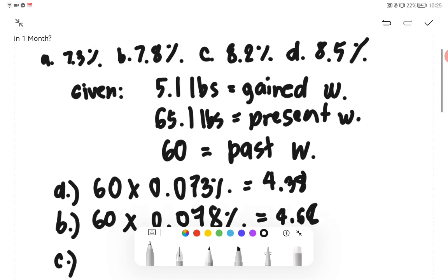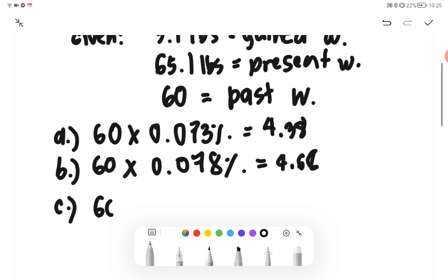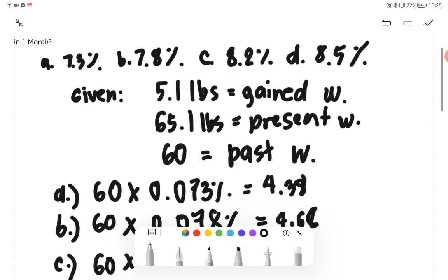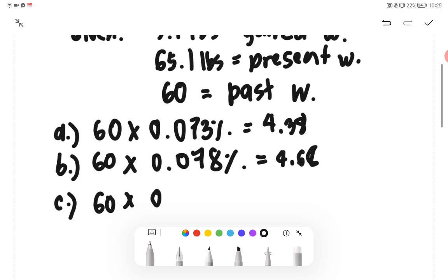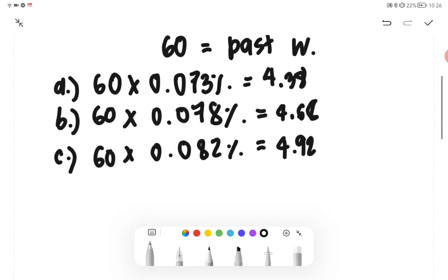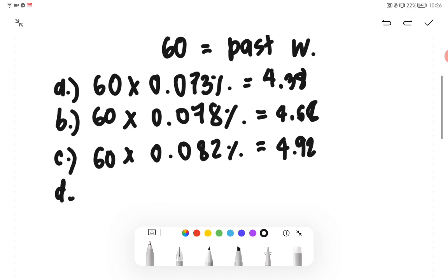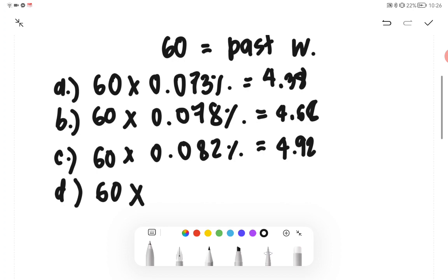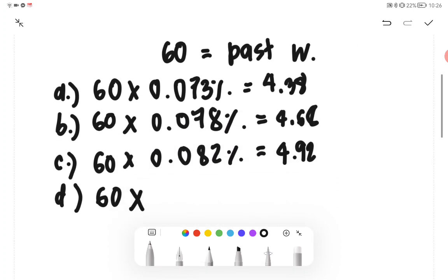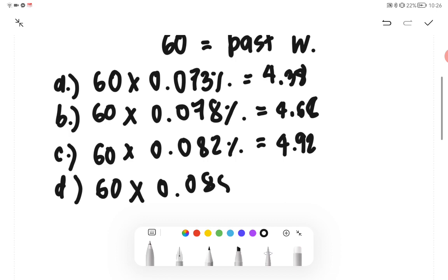And lastly, we have our D, which is 60 multiplied by 0.085, which is equivalent to 5.1.